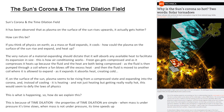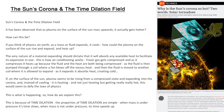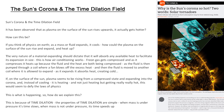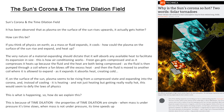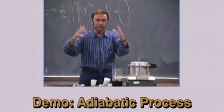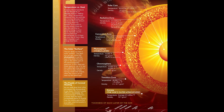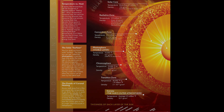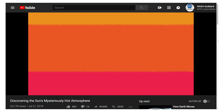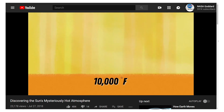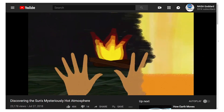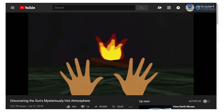It has been observed that as plasma on the surface of the sun rises upwards, it actually gets hotter. How can this be? If you think of the physics on Earth, as mass or a fluid expands, it cools. How could the plasma on the surface of the sun rise and expand and heat up? As you move outward, the layers of the sun become cooler and less dense. Something unusual, however, occurs when you reach the outermost layer. While the surface is around 10,000 degrees Fahrenheit, the corona — the sun's outer atmosphere — is several hundred times hotter. That's the opposite of what happens with a fire, when it gets cooler the farther away you get.